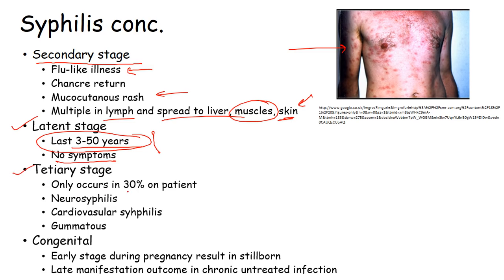The tertiary stage occurs only in 30% of patients, causing neurosyphilis — where syphilis degrades and damages nerve cells — and cardiovascular syphilis, which involves problems with the heart and blood circulation. Normally, the secondary type is restricted to the lymph nodes, liver, muscle, and skin, which is seen in most people, but the tertiary stage is rare.